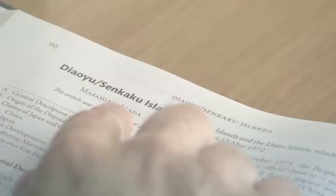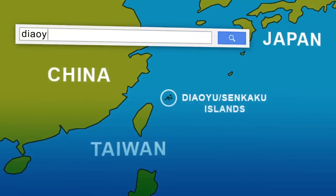For example, a researcher might be interested in the dispute over the Diaoyu/Senkaku Islands, a dispute between China and Japan over some islands in the South China Sea. A researcher would come to Oxford Public International Law and could simply type "Diaoyu" into the search box.